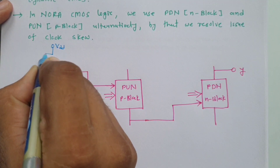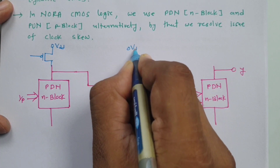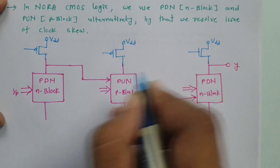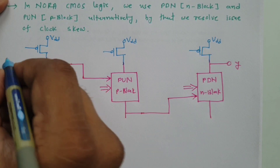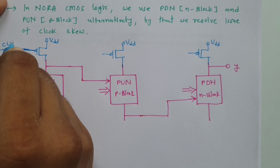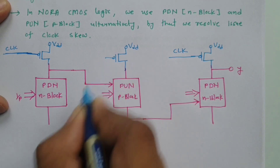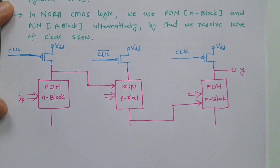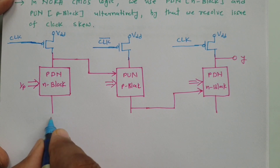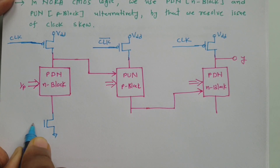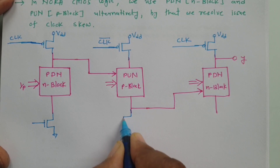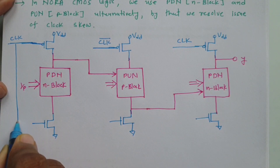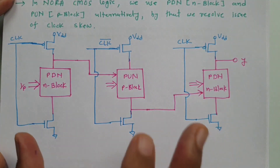Here we have VDD, after which there is a PMOS connection. With all blocks, we need to provide a PMOS connection after VDD. With the N block, we provide the gated clock as clock. With the P block, we provide the gated clock as clock bar. With the next terminal, we need to provide an NMOS as a gated clock, and then provide the ground connection. After the NMOS, we need to provide the ground connection. This is how the gated clock is connected, and this is the basic structure.